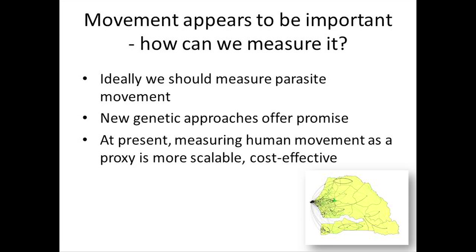Movement seems to be pretty important — so how can we measure it? Ideally we should measure parasite movement using the kind of genetic techniques discussed already, and this approach offers promise. But in many of these countries we don't yet have the funds or techniques to do cross-country sampling of these populations, so human movement as a proxy is more scalable and cost-effective.